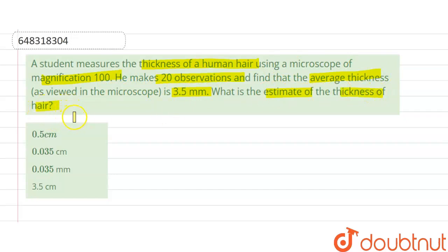So we have to find out the estimate of thickness of hair. We are given: student measures the thickness of human hair using a microscope and the magnification of that microscope is 200. The student makes 20 observations and finds that average thickness is 3.5 millimeter.